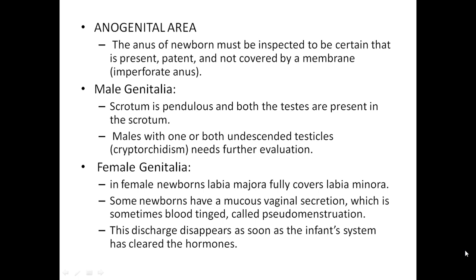Male genitalia: the scrotum is rugated and both testes should be present in the scrotum. Males with one or both undescended testes, known as cryptorchidism, need further evaluation. Female genitalia: in female newborns, the labia majora fully covers the labia minora. Some newborns have a mucus vaginal secretion which is sometimes blood-tinged, called pseudomenstruation. This disappears as soon as the infant's system clears the maternal hormones.